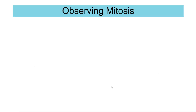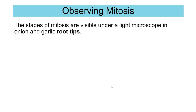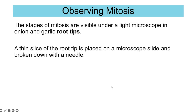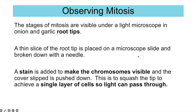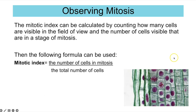You could be asked to observe mitosis under a microscope. This is often done with root tips of plants such as onion and garlic, because that is where lots of mitosis is occurring. A thin slice of the root tip is placed on a microscope slide and broken down with a needle. Acid and heat are added to break down the connections between cell walls, so you get a thin layer when you squash the sample. A stain is added to make the chromosomes visible, and the cover slip is pushed down to squash the tip into a single layer of cells so light can pass through.